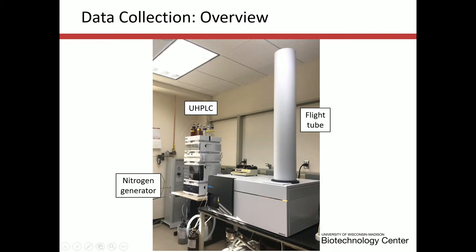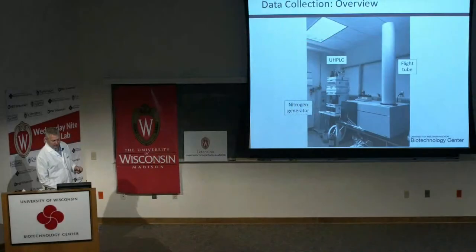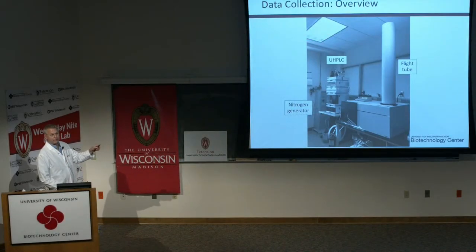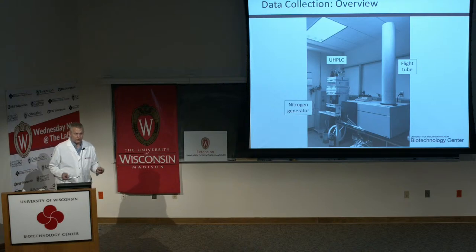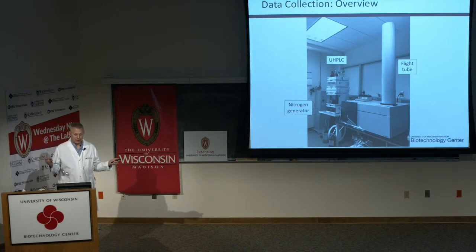Here's a photograph of our lab. The mass spec flight tube is here — the flight path going up and back down is about three meters, a critical figure of merit. Here is the UHPLC system; the column outlet goes into the mass spec inlet. Over here is a nitrogen generator that drives gas delivery to the entire system, ensuring no downtime.